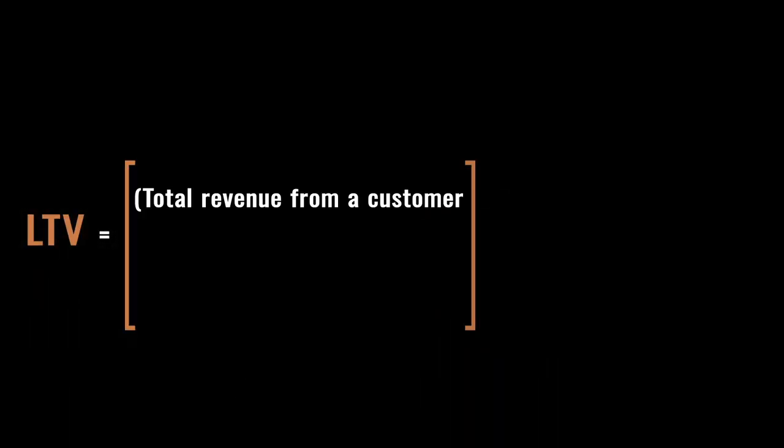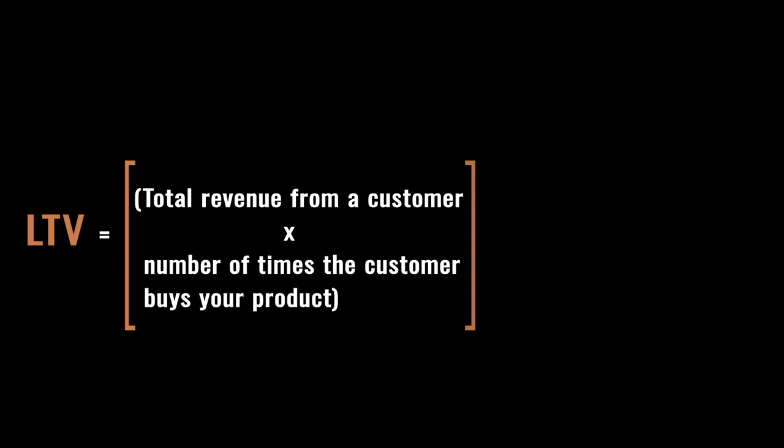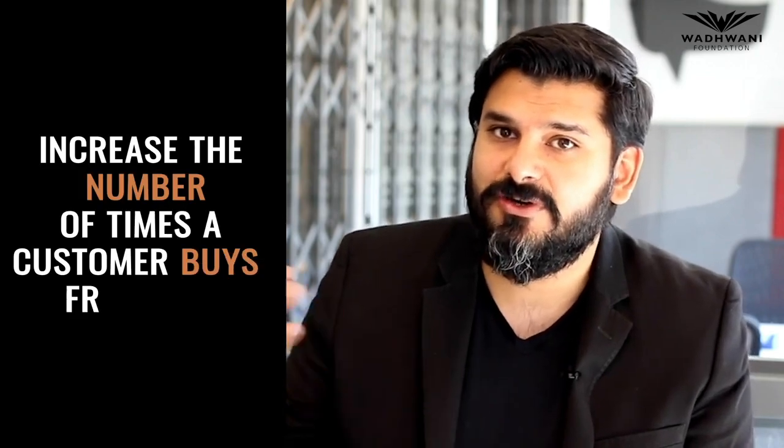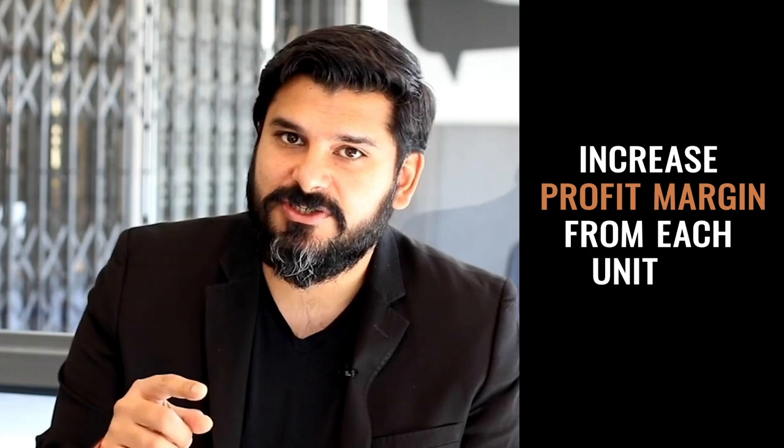In terms of plain mathematics, the equation that would emerge is: the total revenue obtained from a customer multiplied by the number of times the customer will repeat with you, minus the total cost of actually servicing the customer. The way to increase the cumulative lifetime value is simply by either increasing the number of times the customer buys from you, or by increasing the profit margin you get from each product that you sell.